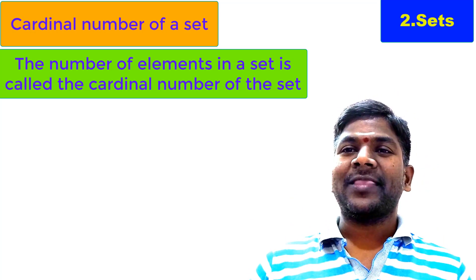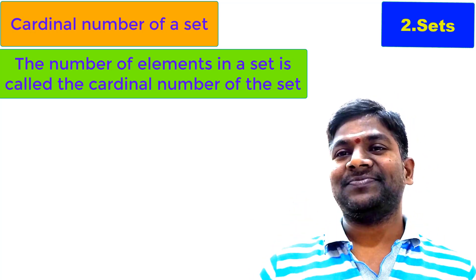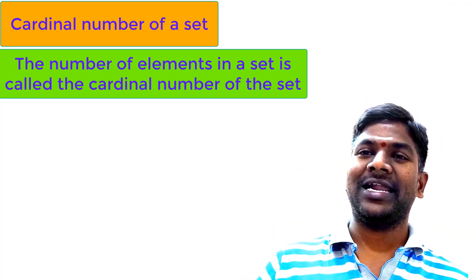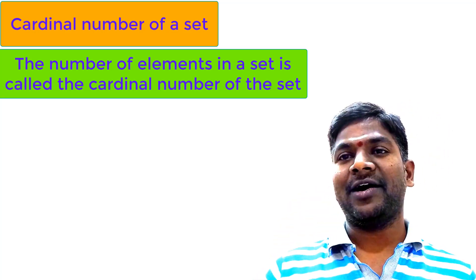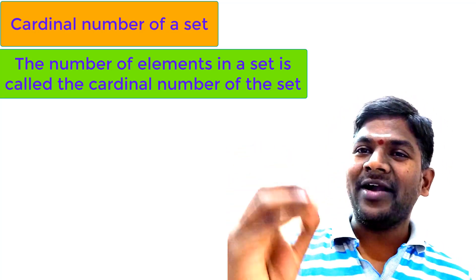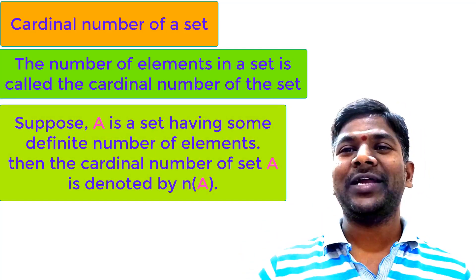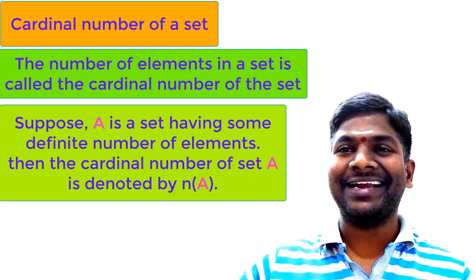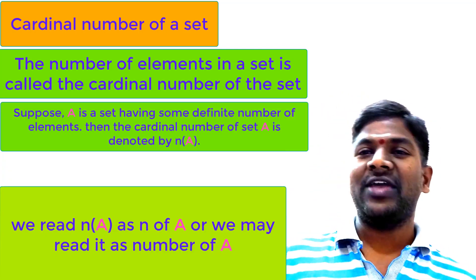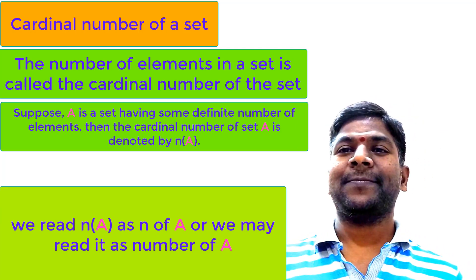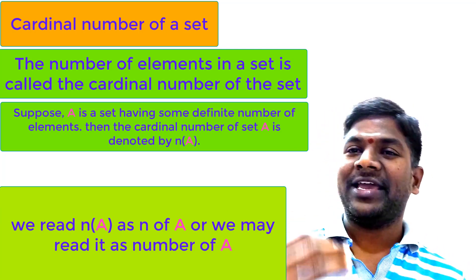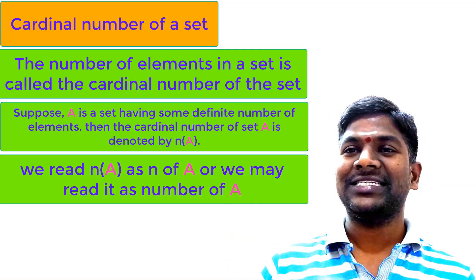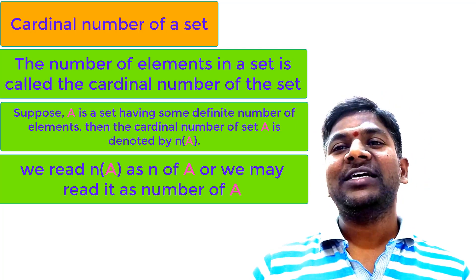Suppose A is a set. The number of elements in set A is called the cardinal number of that set. The cardinal number of set A is denoted by N of A. We read it as 'N of A', or sometimes as 'number of A', or 'number of elements in set A'. N of A means the number of elements in set A — that is the cardinal number of set A.